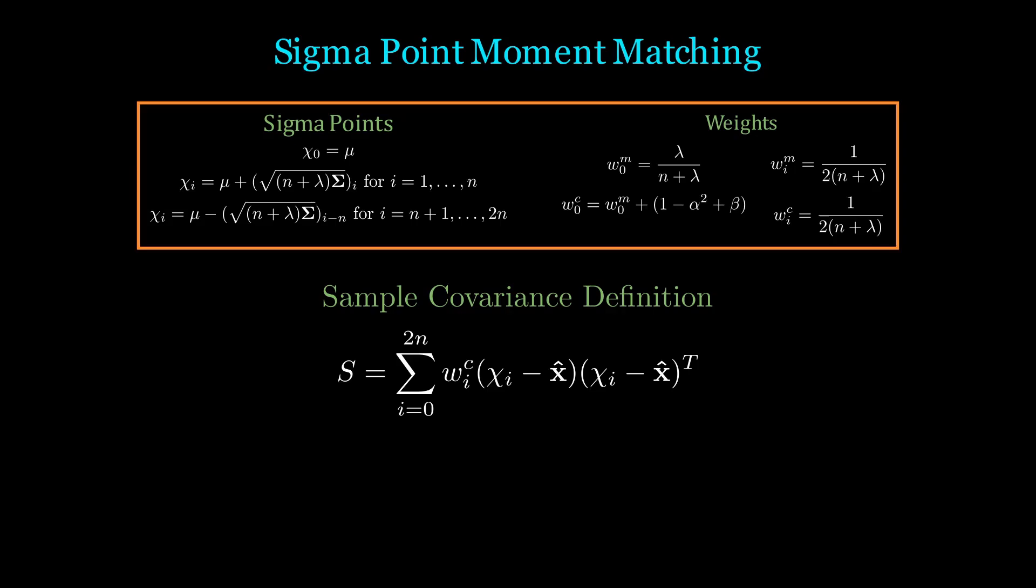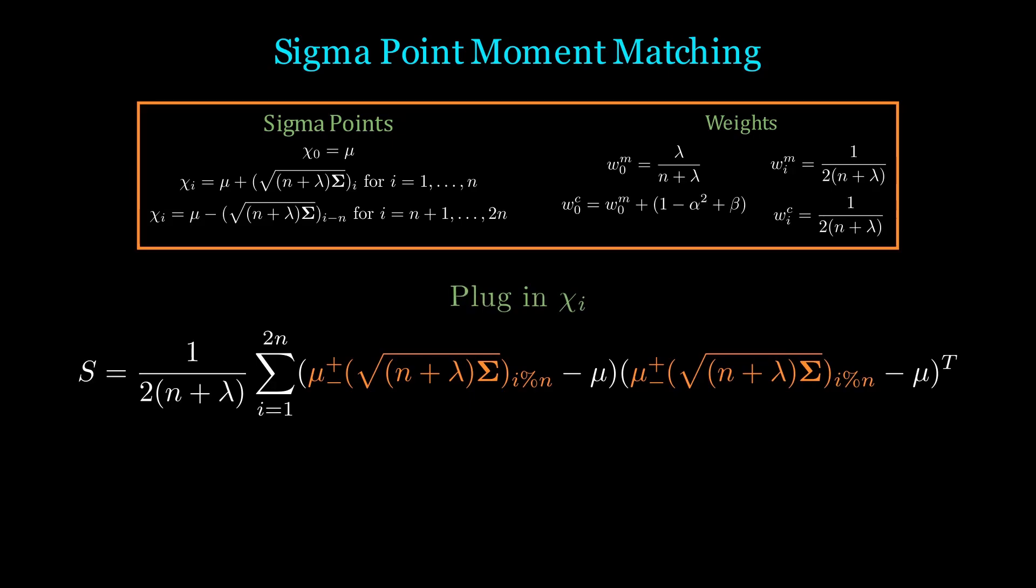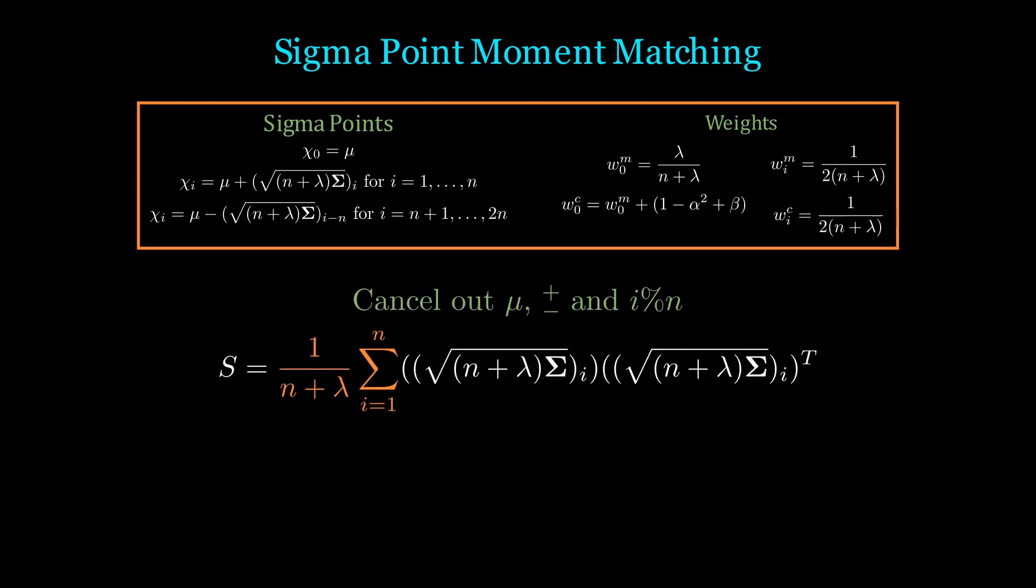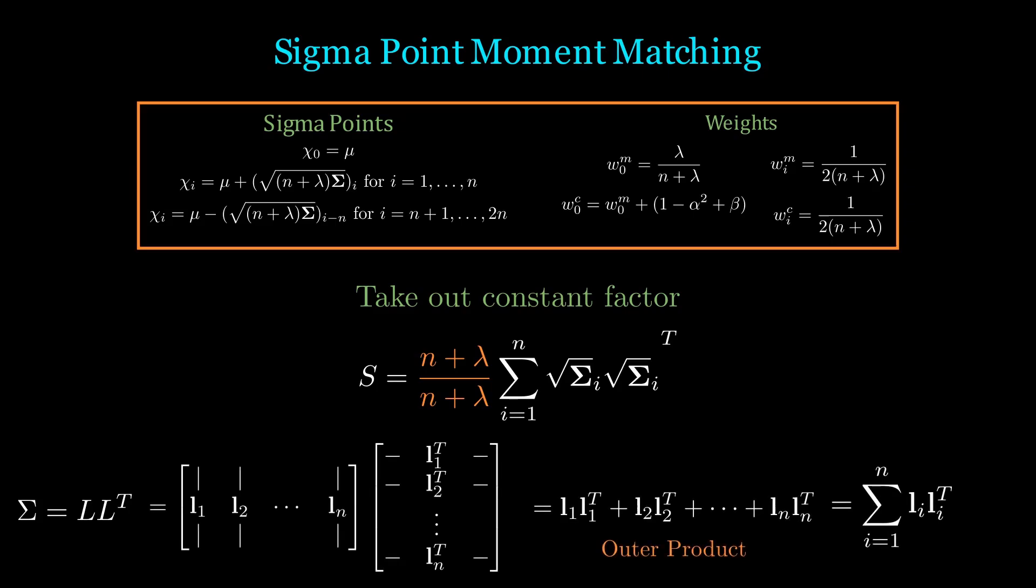For the sample covariance, let's apply the definition. We see that chi0 cancels out since it's exactly equal to the mean. Next, let's plug in our weights which is the same for all the remaining points. Now let's plug in chii. We see the mean cancels out and since we have the product of two of the same things, the plus or minus doesn't matter. We are left with the constant factor which leads us to this form. Note that sigma equals LL transpose, which is simply the outer product of L, which is exactly what we have. Hence the sample covariance perfectly matches sigma, the second moment.